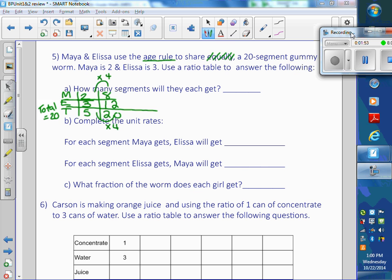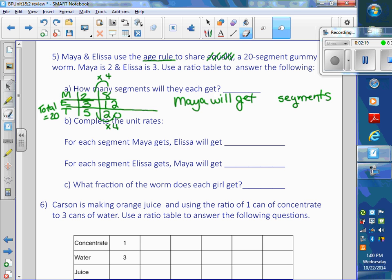Alex. Like a sentence, right? Maya will get 12 segments. Oh, Alyssa, Maya will get 8 segments.